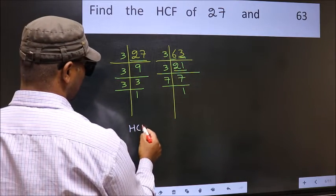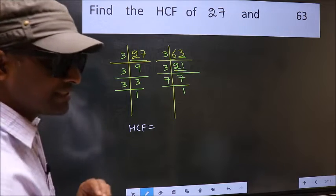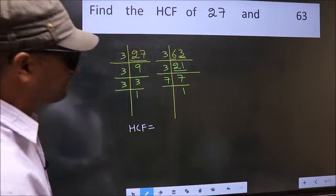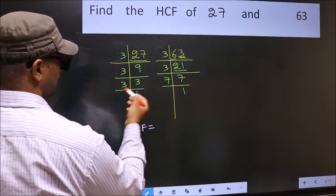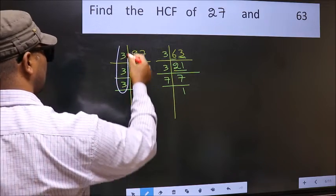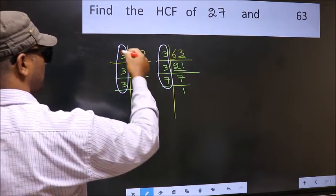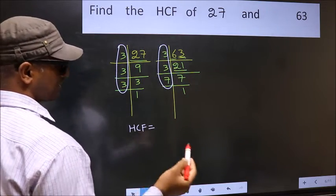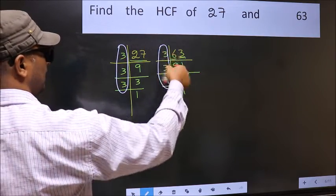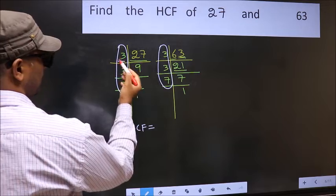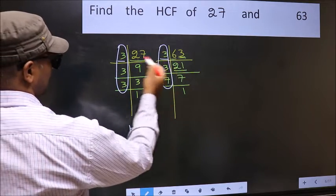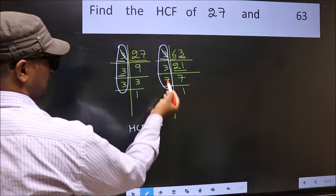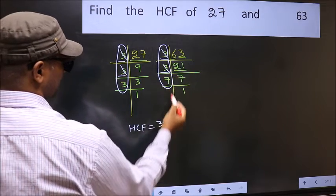Our HCF is the product of numbers which are present in both factorizations. Let us find the numbers present in both. Starting with 3 — do we have 3 here? Yes. Cut 3 right here. Next number 3 — do we have 3 here? Yes. Cut 3 right here.